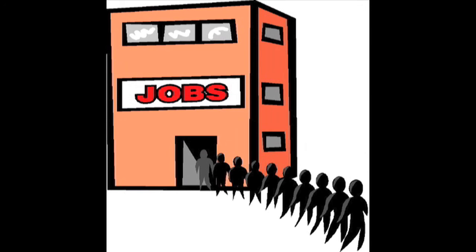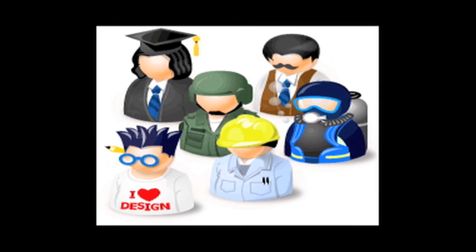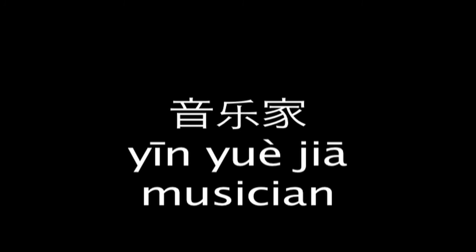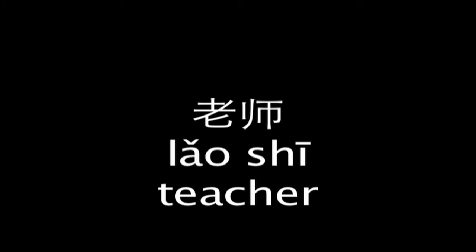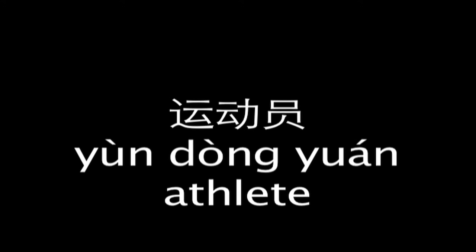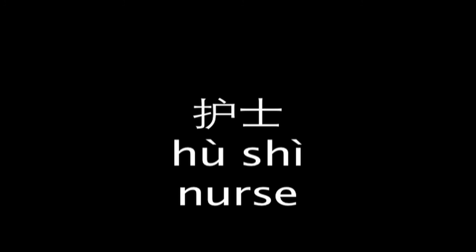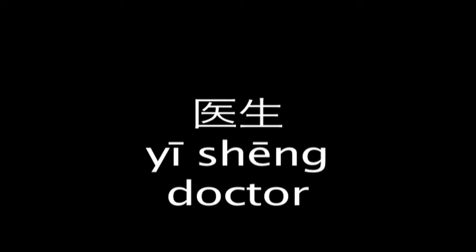Let's look at some examples with different jobs. First, let me teach you a few job titles, and then we'll see if you can put the sentences together. 音乐家 means musician. 商人 means business person. 老师 means teacher. 运动员 means athlete. 护士 means nurse. 学生 means student. And 医生 means doctor.